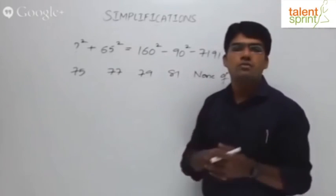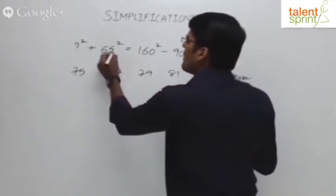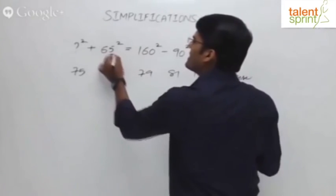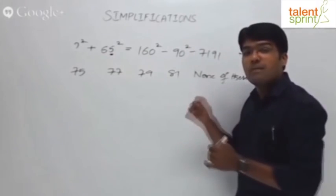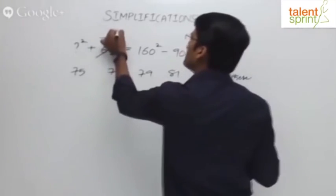So depending on the options, you have to select the method. Now, 5 squared. When a number ends in 5, we very well know this from the speed maths video now. When a number ends in 5, its square always ends in 5. So I know that this number is going to end in 5.